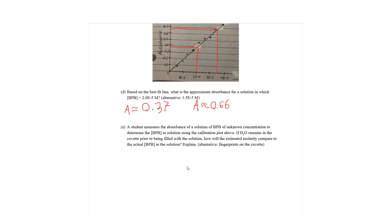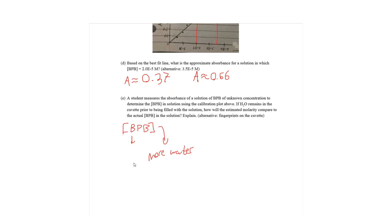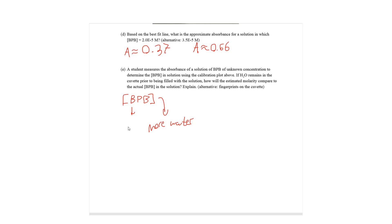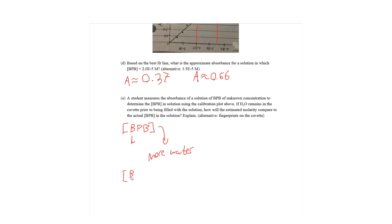Part E says a student measures the absorbance of a solution of BPB of unknown concentration to determine the concentration of BPB in a solution using calibration plot above. If H2O remains in the cuvette prior to being filled with the solution, how will the estimated molarity compare to the actual BPB in the solution? So, if you pour the solution of BPB into more water, the concentration decreases, which means you'll be measuring a lower concentration than the actual original solution because you're diluting it. So, that means that the actual concentration of BPB is greater than the measured.